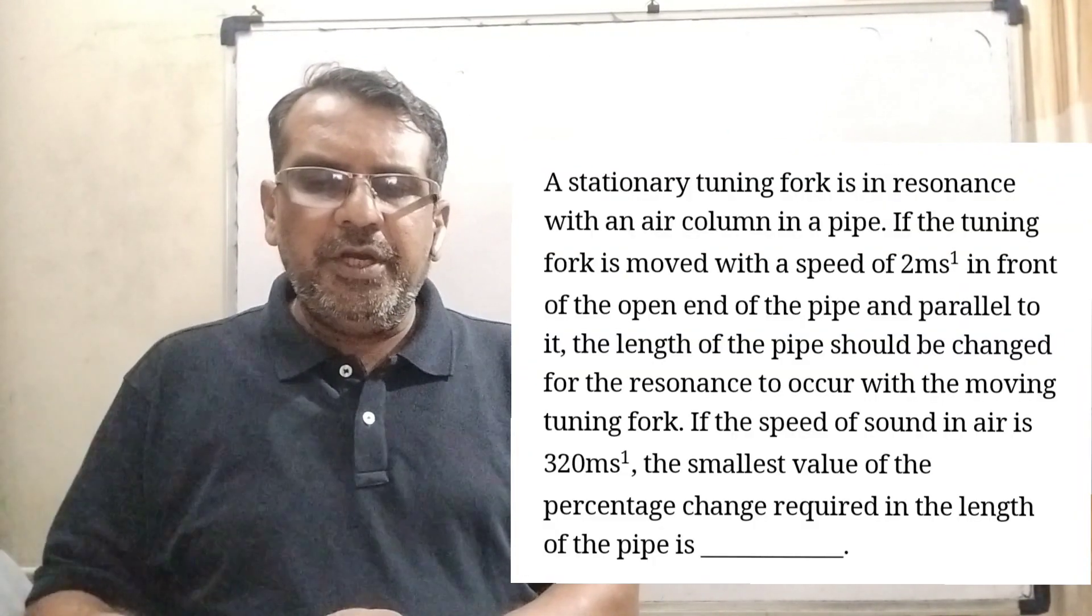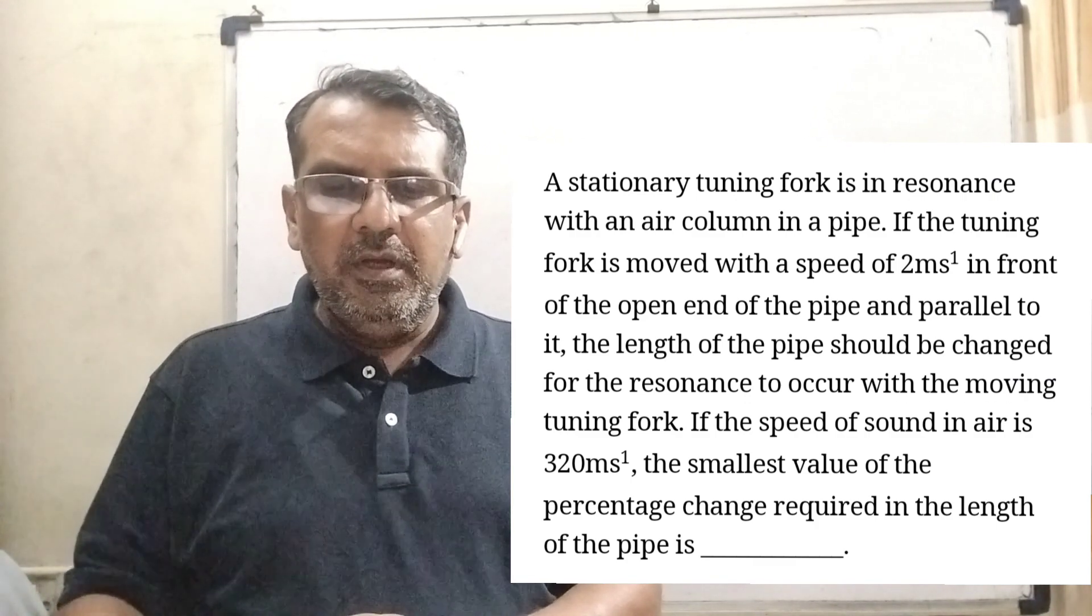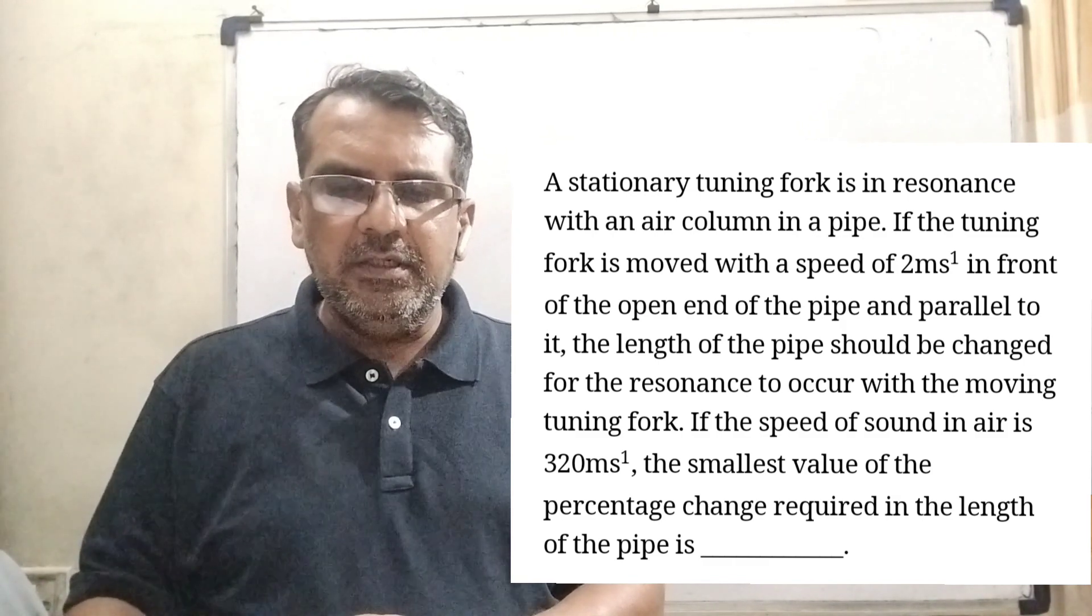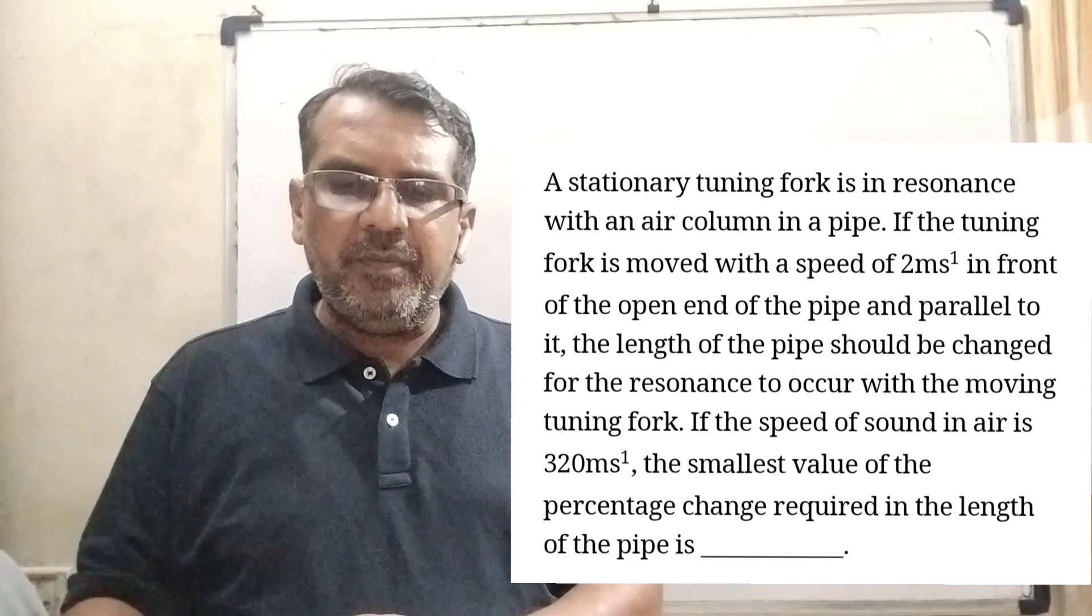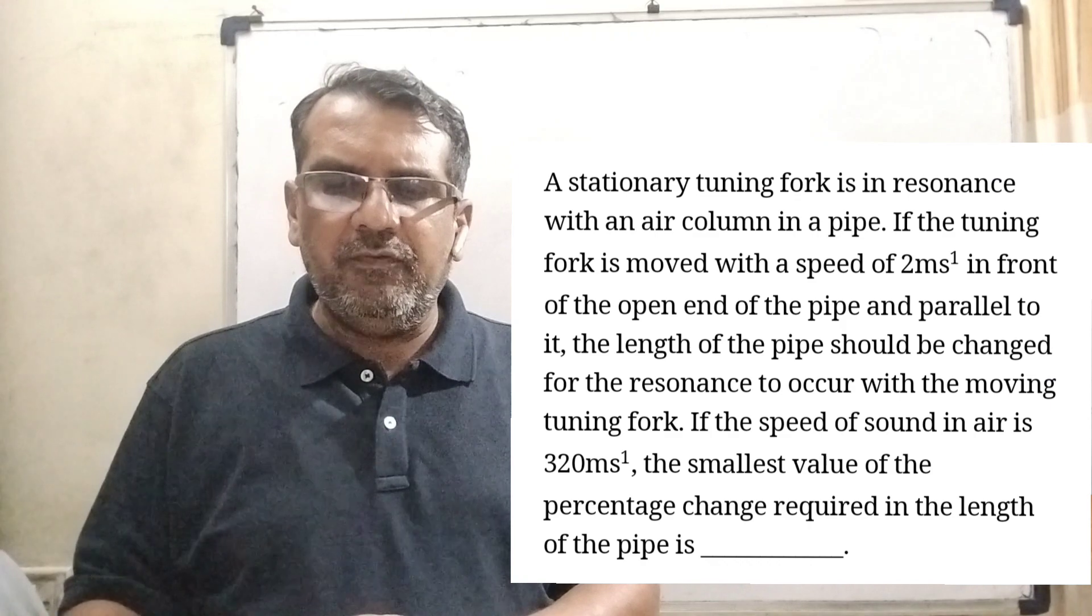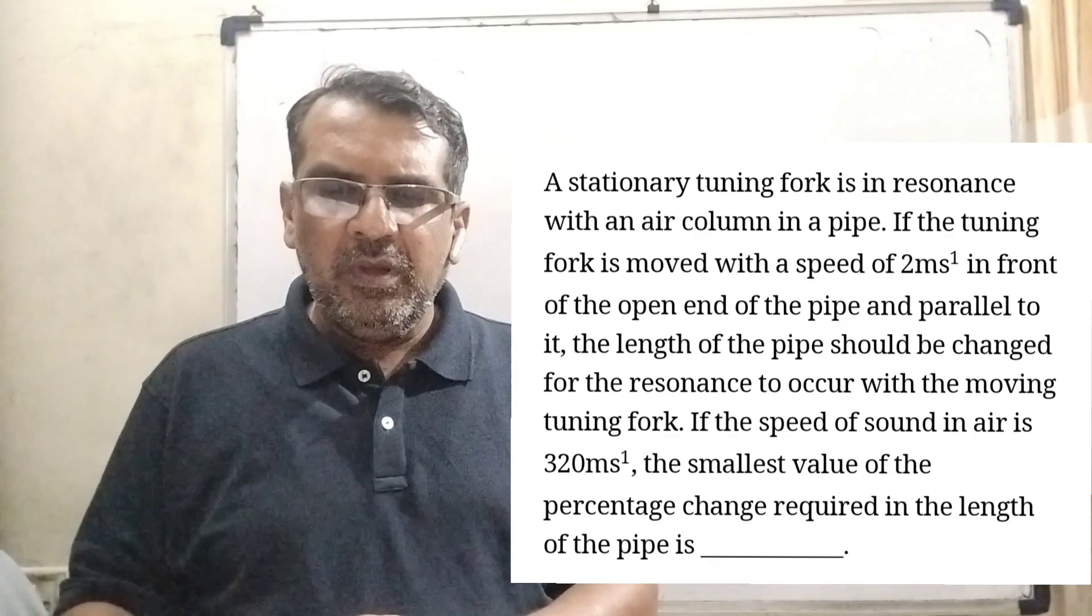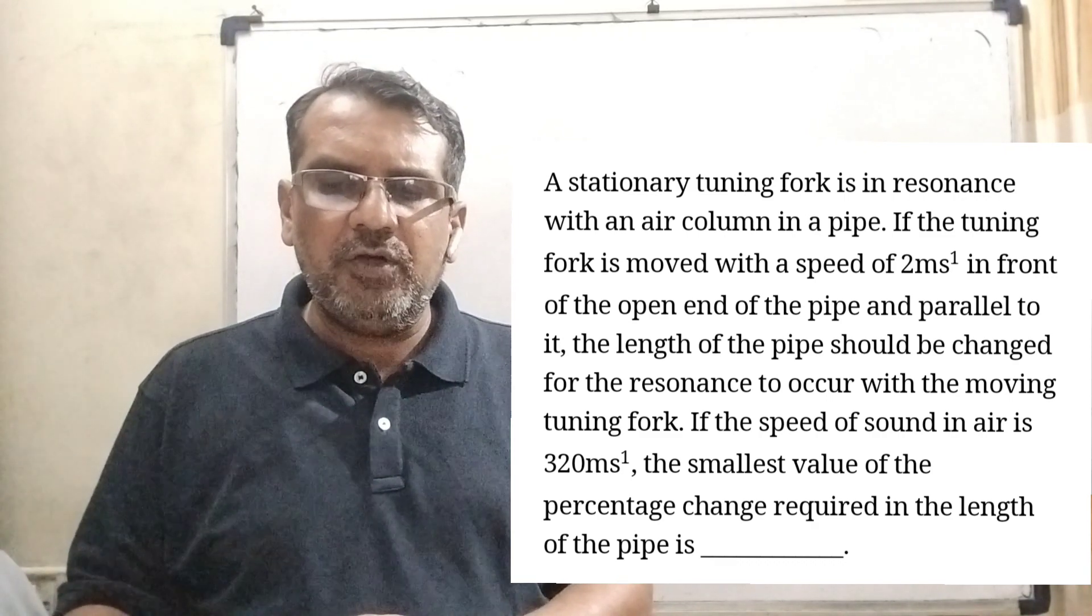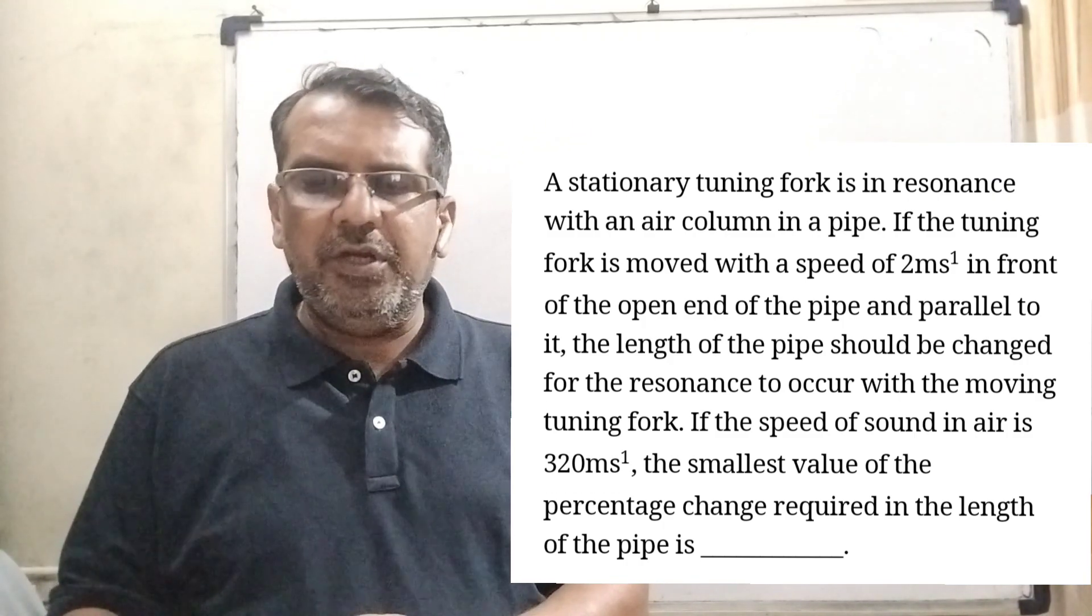Now the question is here. A stationary tuning fork is in resonance with an air column in a pipe. If the tuning fork is moved with a speed of 2 meter per second in front of the open end of the pipe and parallel to it, the length of the pipe should be changed for the resonance to occur with the moving tuning fork. If the speed of sound in air is 320 meter per second, the smallest value of the percentage change required in the length of the pipe is. This question is from JEE Advanced 2020.